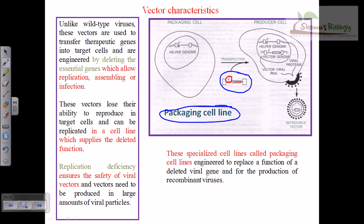In this cell line's genome, we don't have the virulent factors, but instead we incorporate some genes that can produce proteins which can produce the viral capsid — like gag, pol, and env in the case of retrovirus. These proteins can produce the coat for these viruses. So we take this viral genome with our target gene and insert it into this new packaging cell line, which is complementary and supplementary, along with the viral gene packaging signal.